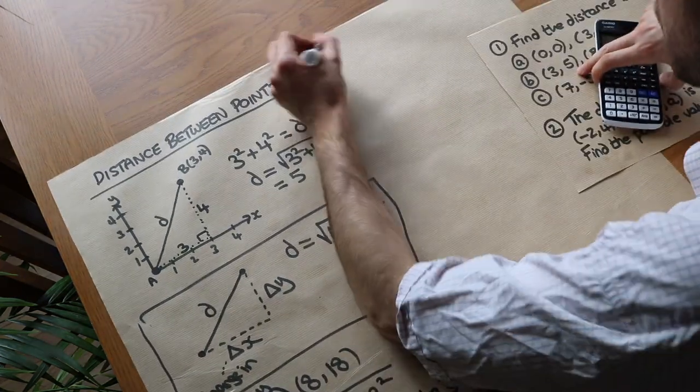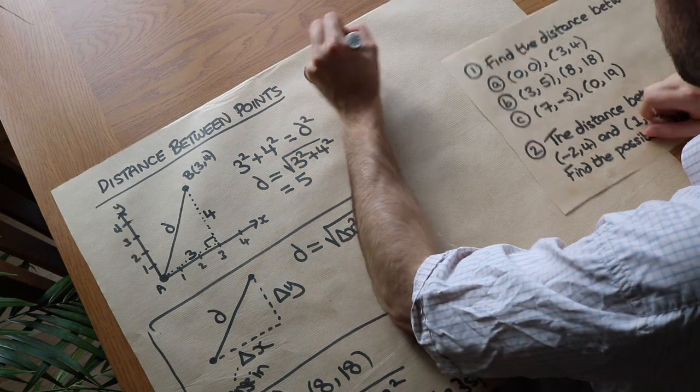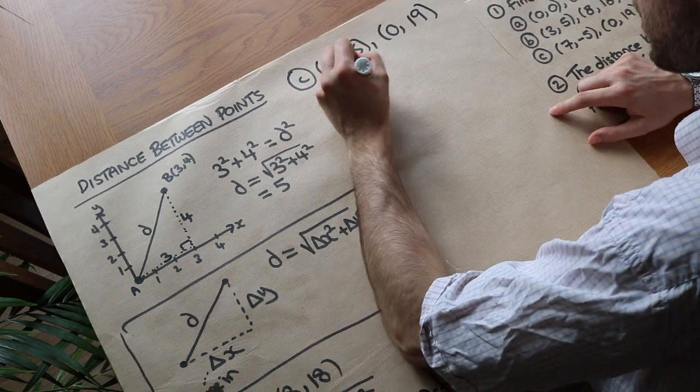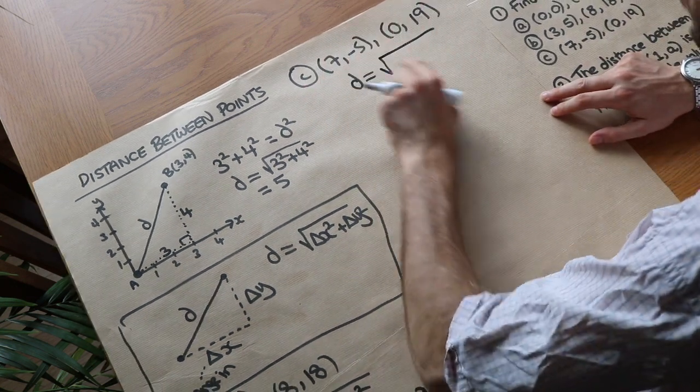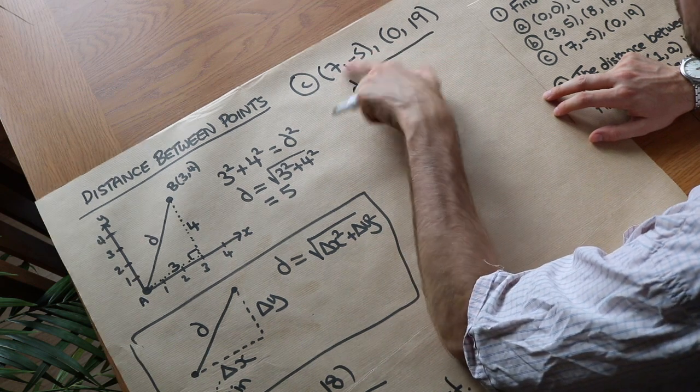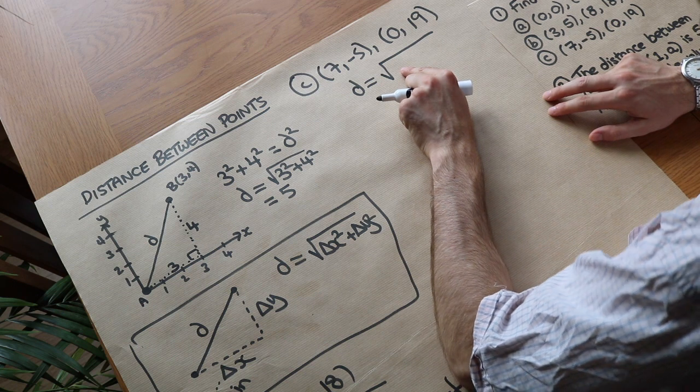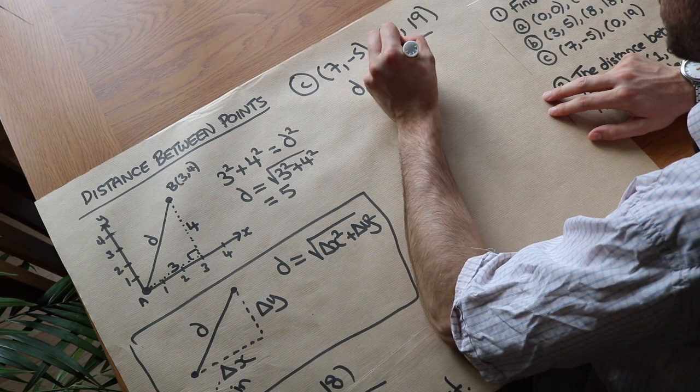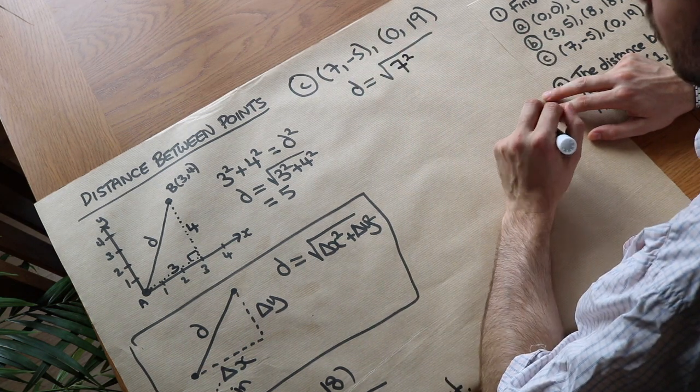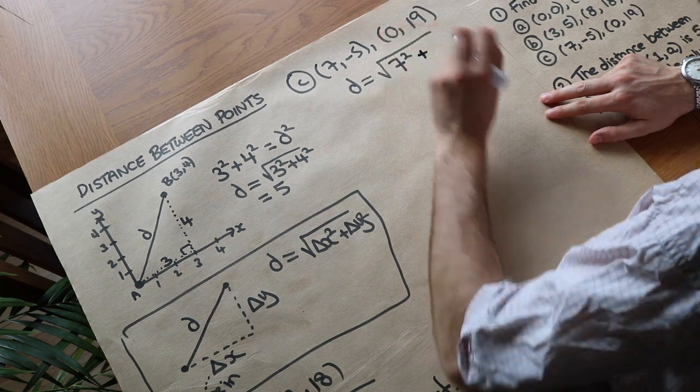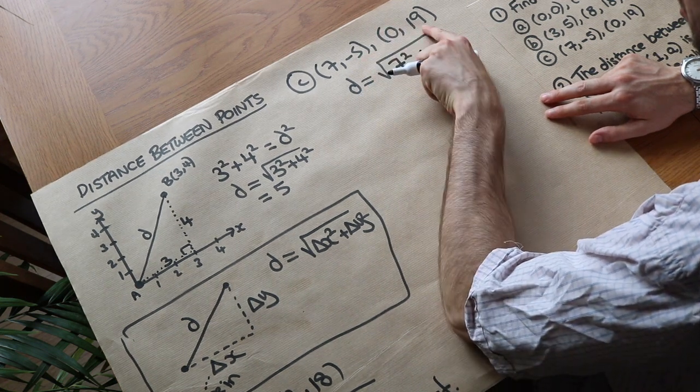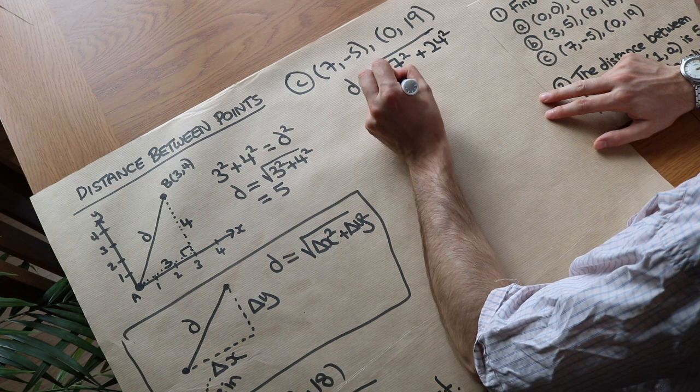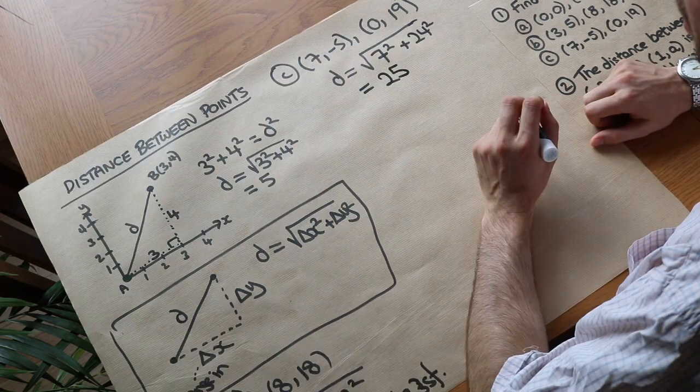If we do the next one, we've got 1c, we've got 7 minus 5 and 0, 19. Now, the distance is the square root of, what's the change from 7 to 0? Now, you might be tempted to put minus 7, and you could do minus 7 squared, which is 49. Well, you might as well consider the change to be positive, so we could just use 7 squared, because 7 squared is the same as minus 7 squared, isn't it? They'll both be positive. Plus, what's the change in y? Well, from minus 5 to 19, we're adding 24, so it's 24 squared. And we put that into a calculator, we end up with 25. So the distance between those is 25.